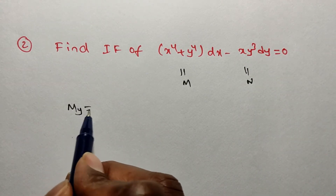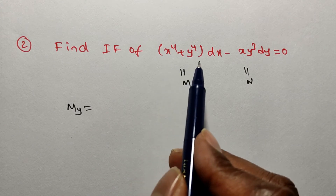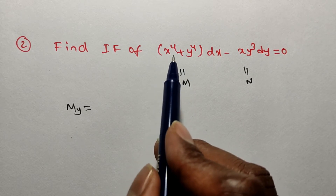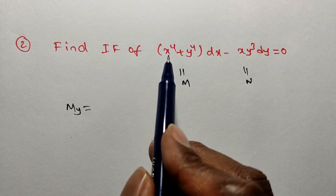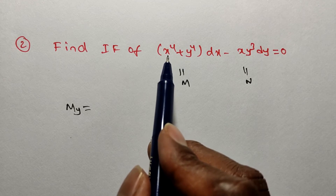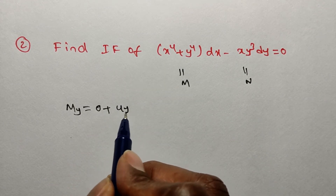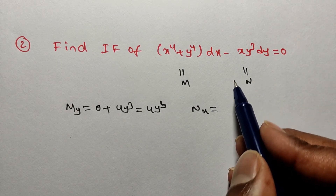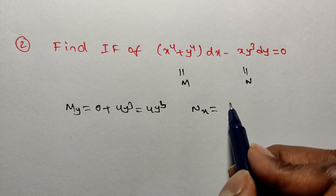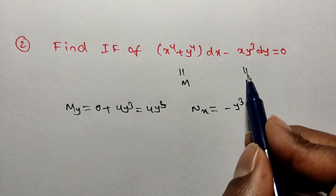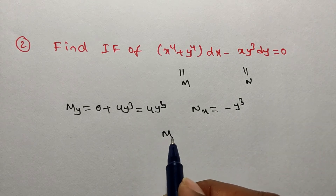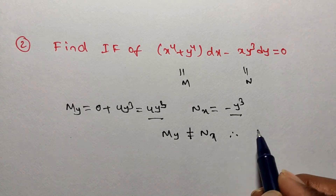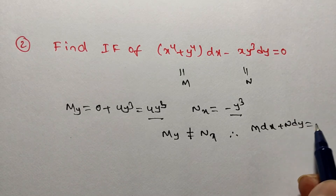The given problem is in the form of M dx plus N dy equals 0, but N has a negative sign. Now dou M by dou y: x to the power 4 does not contain y, so it is a constant with derivative 0. Then y to the power 4 derivative is 4y cubed. So dou M by dou y equals 4y cubed. For dou N by dou x: the negative sign remains, y cubed is constant, and x derivative is 1, giving minus y cubed. Since 4y cubed is not equal to minus y cubed, this is a non-exact differential equation.